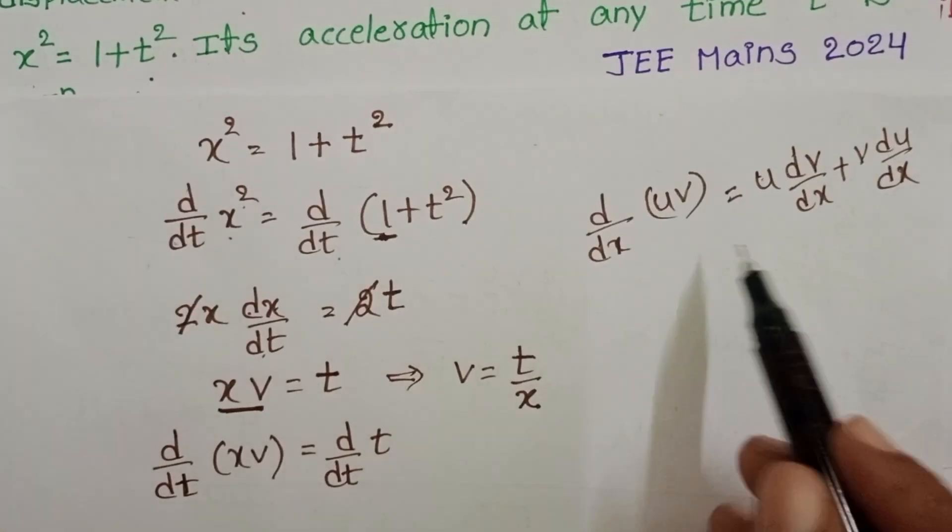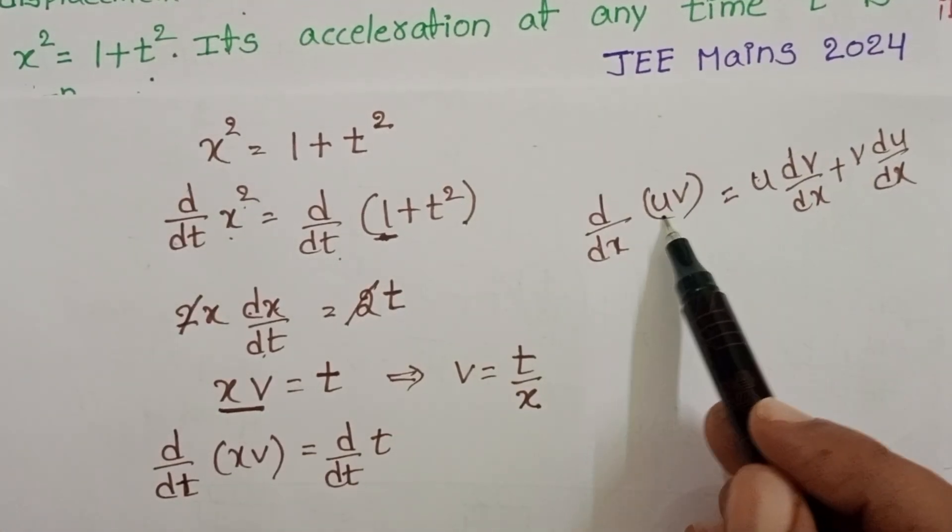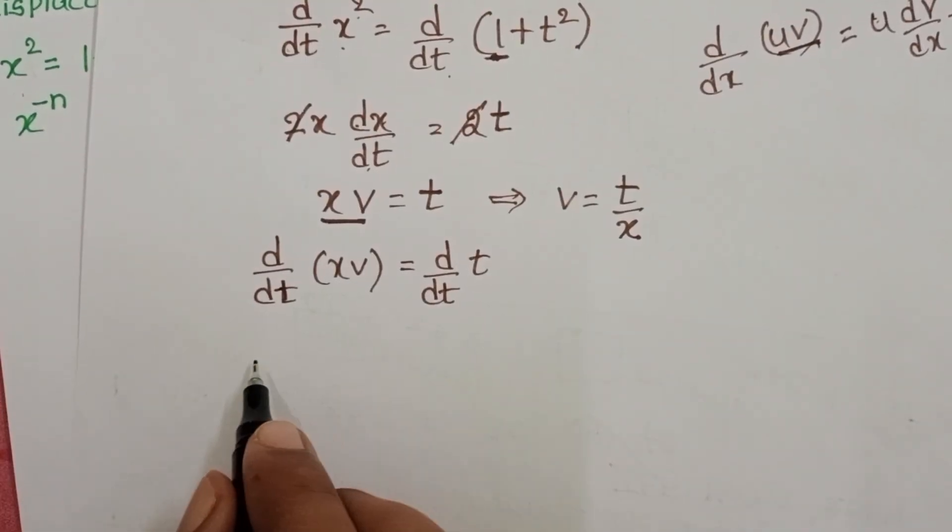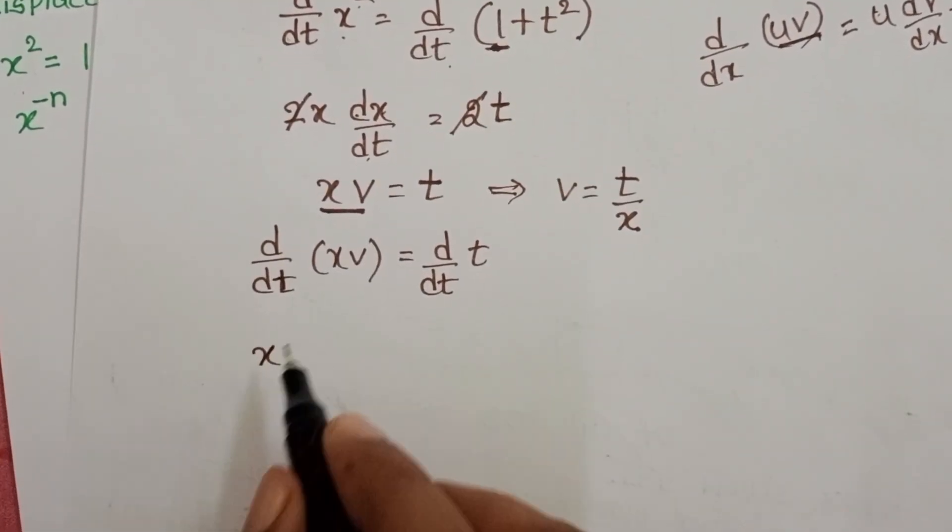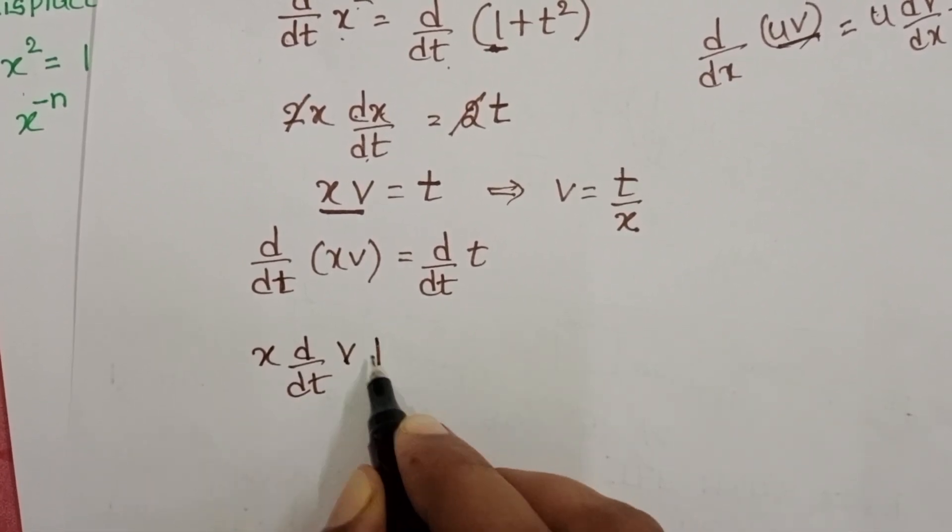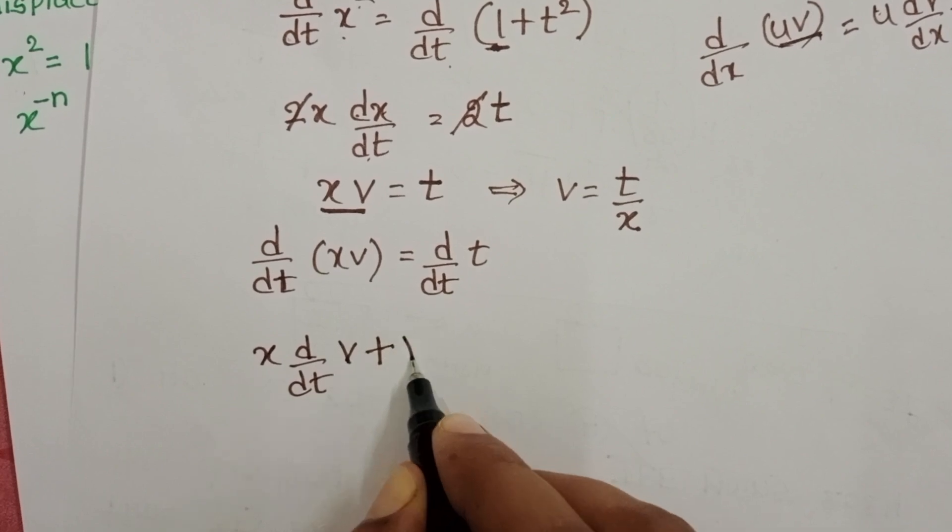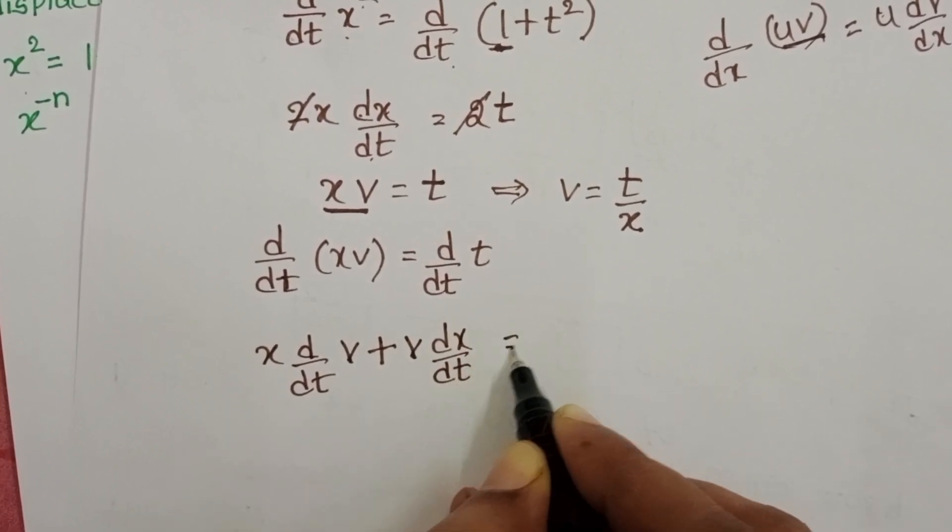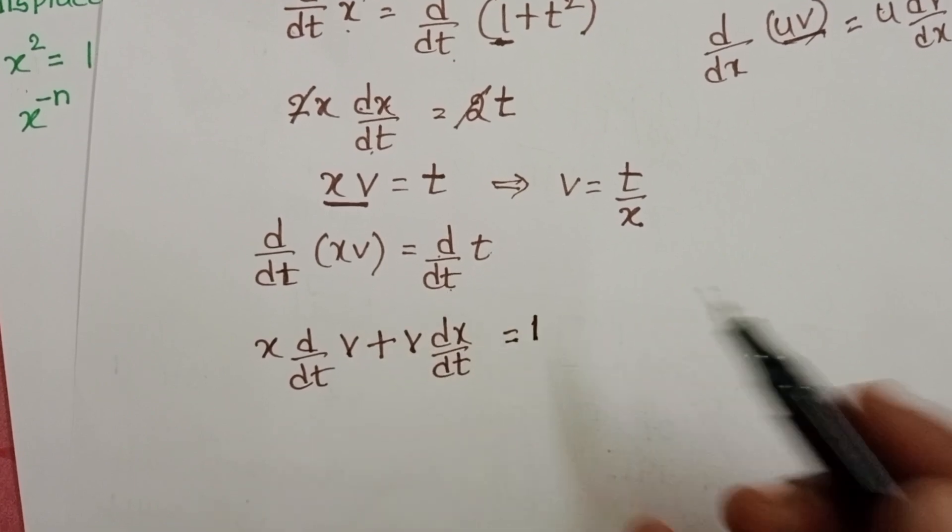This is the formula to do the differentiation for the product of two terms. First, take xv equals x dv/dt plus v dx/dt equals dt/dt, which becomes 1.